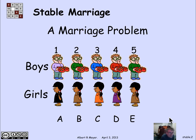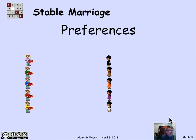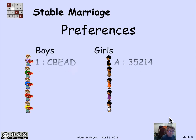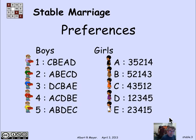The setup is that there's some number of boys — in this case five, one through five — and an equal number of girls labeled A through E. Each of the boys has a ranking of the girls, different rankings because different boys have different preferences. Likewise, the girls have rankings of the boys; different girls have different preferences. So here, girl A likes boy three best and boy five second best, and boy one likes girl C best and girl D least.